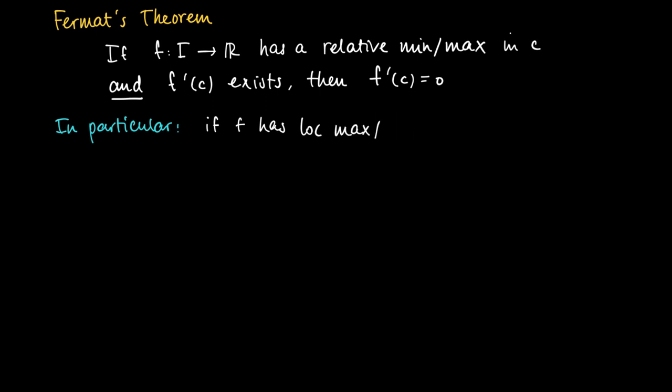So suppose we have a local or relative maximum or minimum in c. Then Fermat's theorem says that when f prime c exists, then the derivative should be equal to zero. So that's one case. Or we must conclude that the function is not differentiable at c.